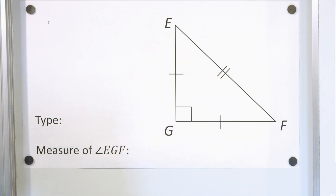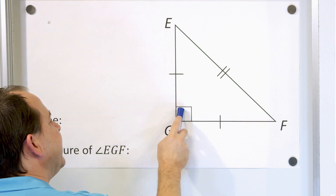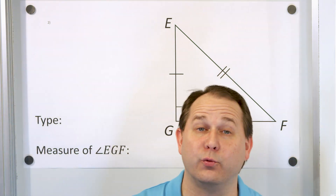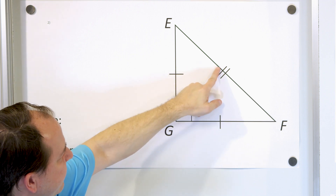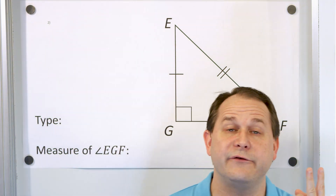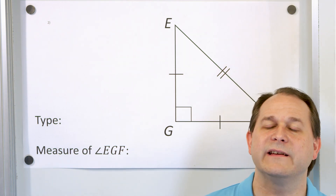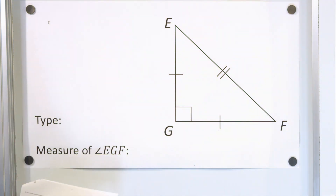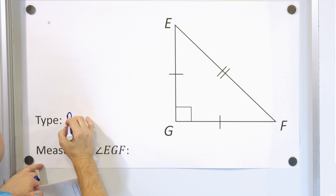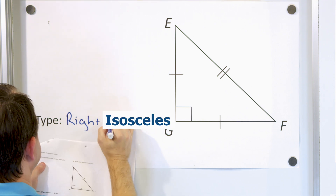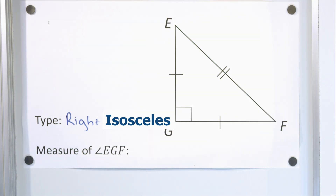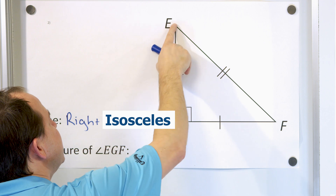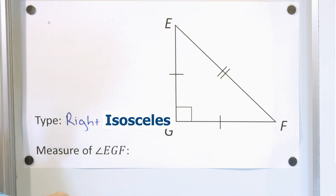Problem number two: we have a triangle and want to identify its type. We see immediately that there is a right angle here, so this is a right triangle. We also know that two sides are the same length but the third is different — that's isosceles. So we call this an isosceles right triangle. For the next part: the measure of angle EGF — the square symbol tells us that is a 90-degree angle.